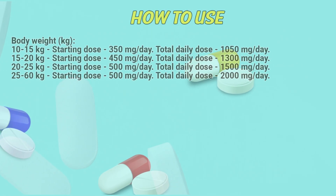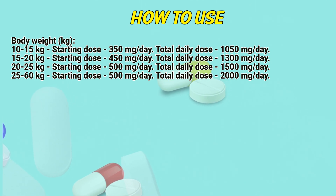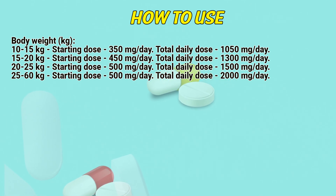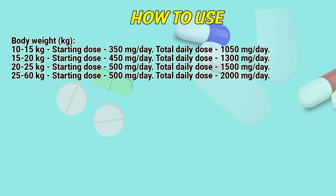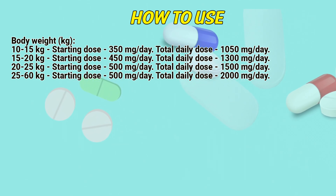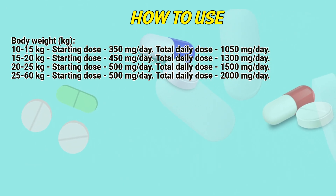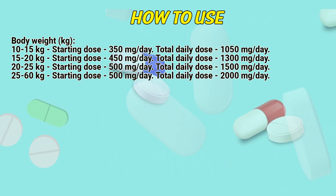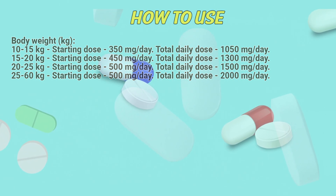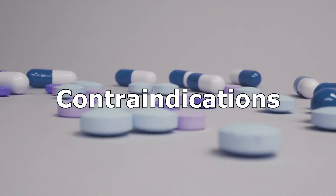Body weight 10 to 15kg: starting dose 350mg per day, total daily dose 1050mg per day. 15 to 20kg: starting dose 450mg per day, total daily dose 1300mg per day. 20 to 25kg: starting dose 500mg per day, total daily dose 1500mg per day. 25 to 60kg: starting dose 500mg per day, total daily dose 2000mg per day.